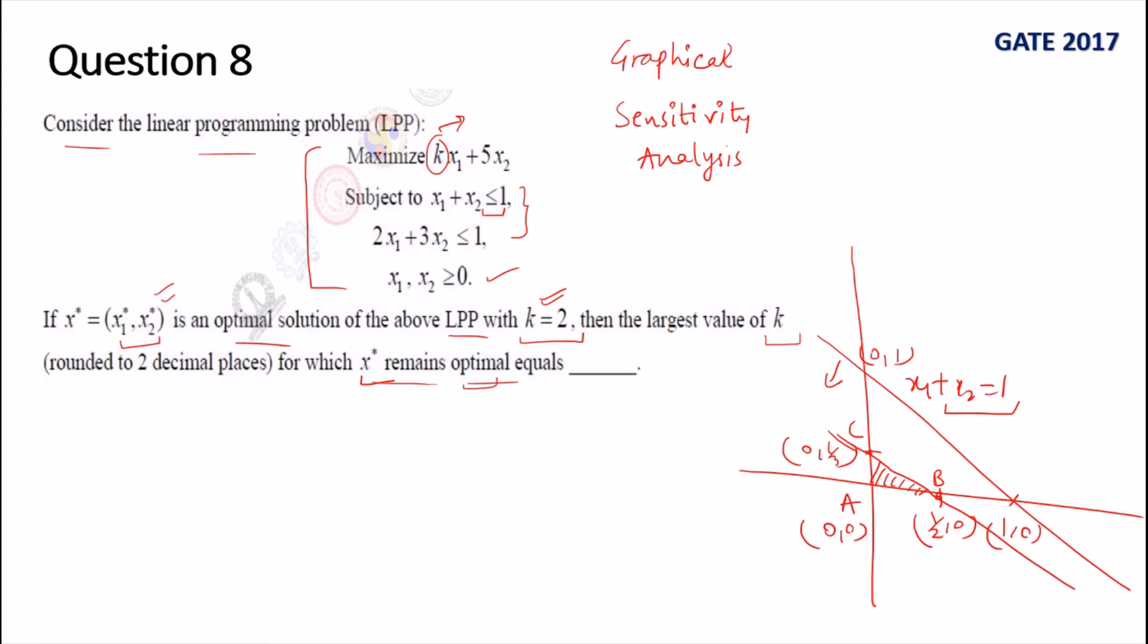If you put k=2 in the objective function, you get 2*x1 + 5*x2. If we put (0,0), obviously the value is zero. If we put (1/2, 0), the value is 2 × 1/2 which is 1. And (0, 1/3) - if we substitute this, we have three vertices and we know the optimal solution must be at the vertices, so we can test like this. This is 0 + 5/3 which is 5/3. So clearly this is the maximum, so this point C is optimal. For k=2, this point C is the optimal solution.